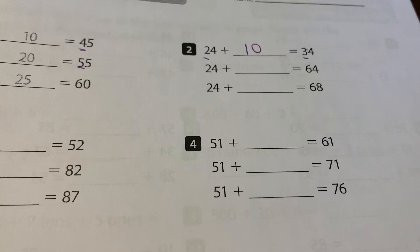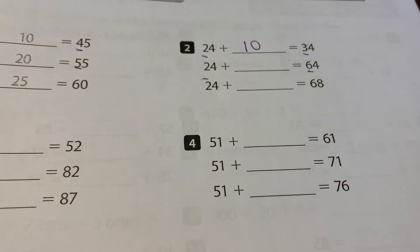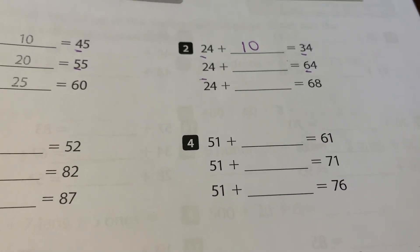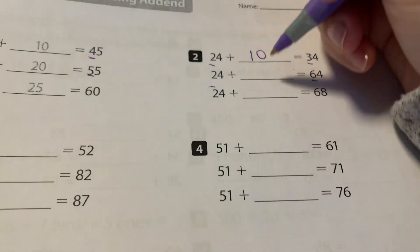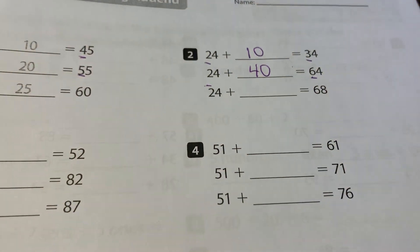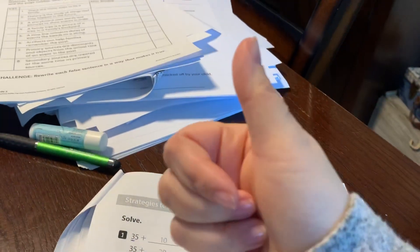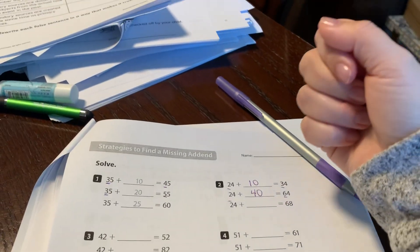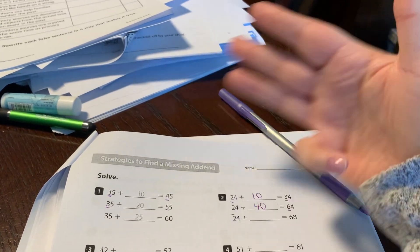Now in the next part, 24 plus a number equals 64. Well, I know that two plus four equals six. That's my tens place. So that's going to be 40. If you're not sure, you could even count by tens to try it. So I could think to myself, I'm going to use my fingers. 24, 34, 44, 54, 64. That's 40.